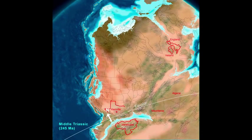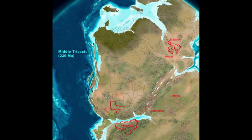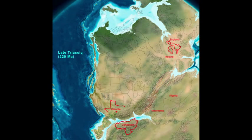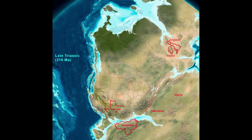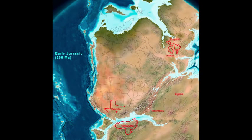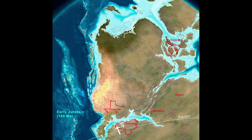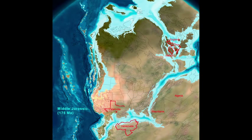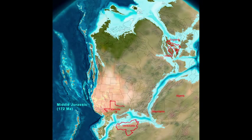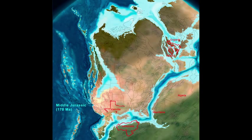Pangea shows some signs of wanting to break apart but never quite manages to do so. Several rifts form near our present east coast, from Connecticut to the Carolinas, but they fail to separate the continent — the eventual split will come later and a little further east. The breakup of Pangea has now begun for real, starting with the separation of Gondwana from North America. Thick salt deposits formed in the narrow and restricted Gulf of Mexico, which was just beginning to open at this time. Much of the salt was later raised into the many salt domes which now dot the Gulf Coast.